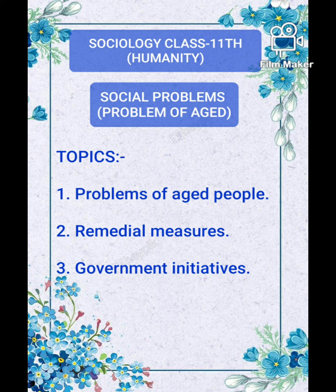A man's life is normally divided into five stages, namely infancy, childhood, adolescence, adulthood, and old age. In each of these stages, an individual finds himself in different situations and faces different problems. Old age is viewed as an unavoidable, undesirable, and problem-ridden phase of life.